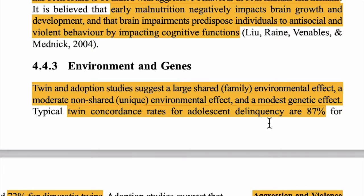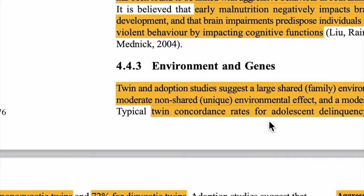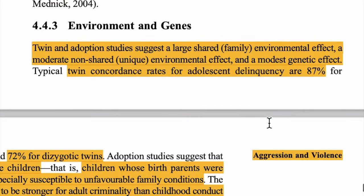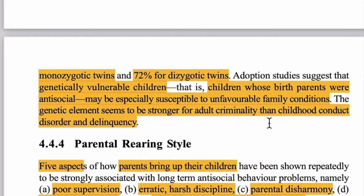अब तीसरा factor है environment and genes। Twin और adoption studies suggest करती हैं कि environmental effect ज़्यादा scale पर असर डालता है, family का environment medium level पर, और genetic effect बहुत कम — modest — असर डालता है।